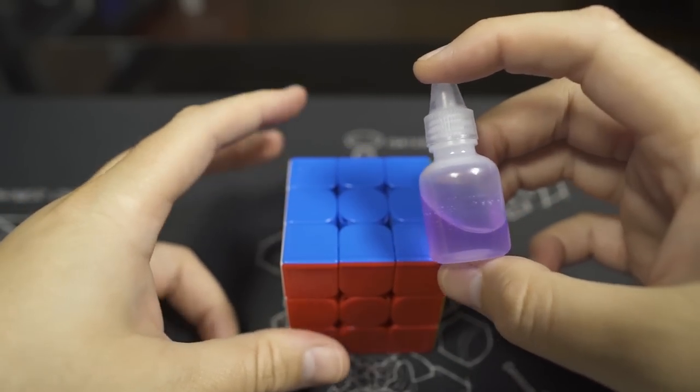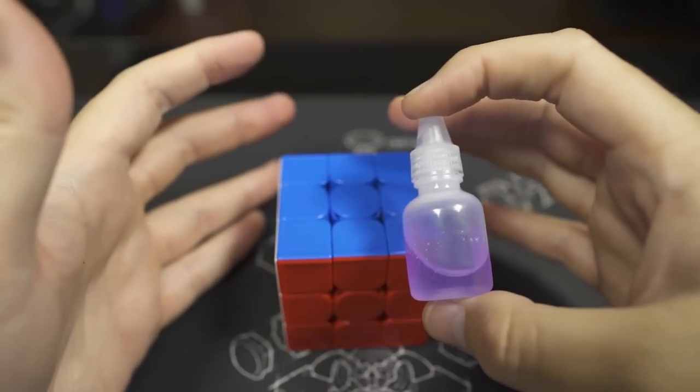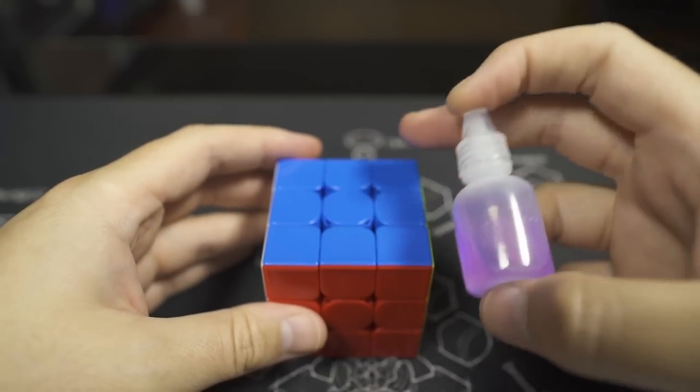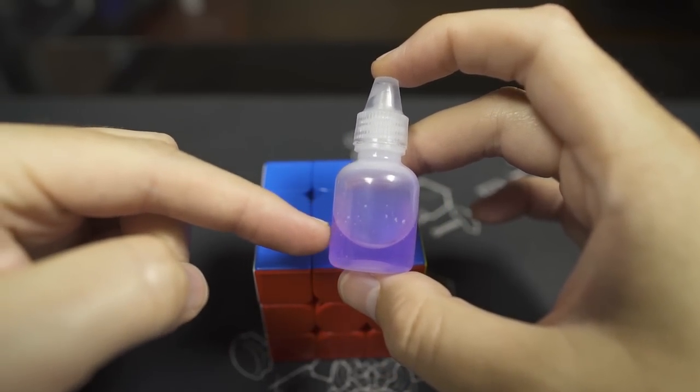The way this lube works is you put two or three drops in, then you have to break the cube in because it doesn't work instantly like silicone. It has to spread around the cube because it actually attracts to itself to slow the cube down.